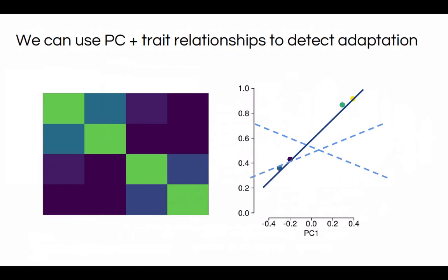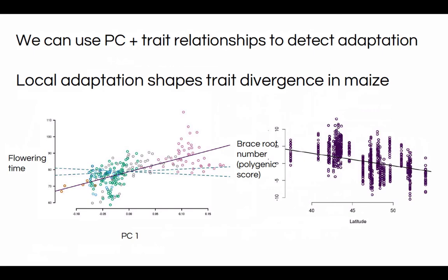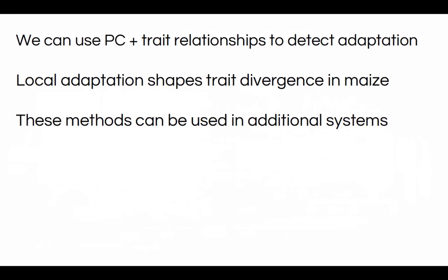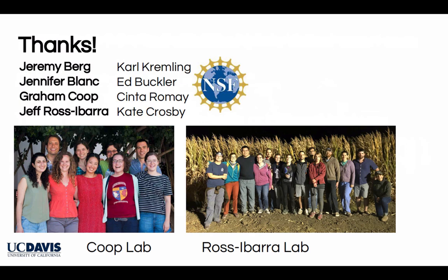Overall, I've told you that we can use the relationship between principal components of relatedness and trait values to detect adaptation in populations. We can show that local adaptation has shaped trait divergence in maize, both from direct measurements of traits and from predicted trait values using polygenic scores. There's a lot of potential to use these methods in additional systems — please get in touch or look out for this method. I have a lot of people to thank: my co-authors Jeremy, Jennifer, Graham, and Jeff, as well as my host labs and NSF for funding. I'll be starting my own lab in 2019 at Michigan State — please get in touch if you're interested in working together. Thank you for listening.